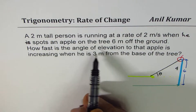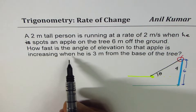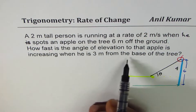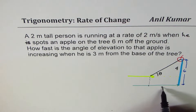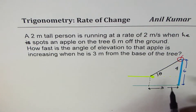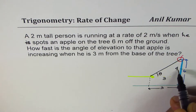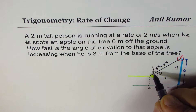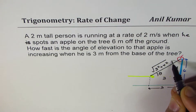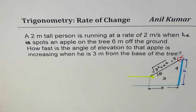How fast is the angle of elevation to that apple increasing when he is 3 meters from the base of the tree? At one time it will be 3 meters away. If he is 3 meters away from the base of the tree, this will be 3. So at that instance, the distance here will be √(3² + 4²) = √(9 + 16) = √25 = 5. So at that time, the distance is going to be 5.